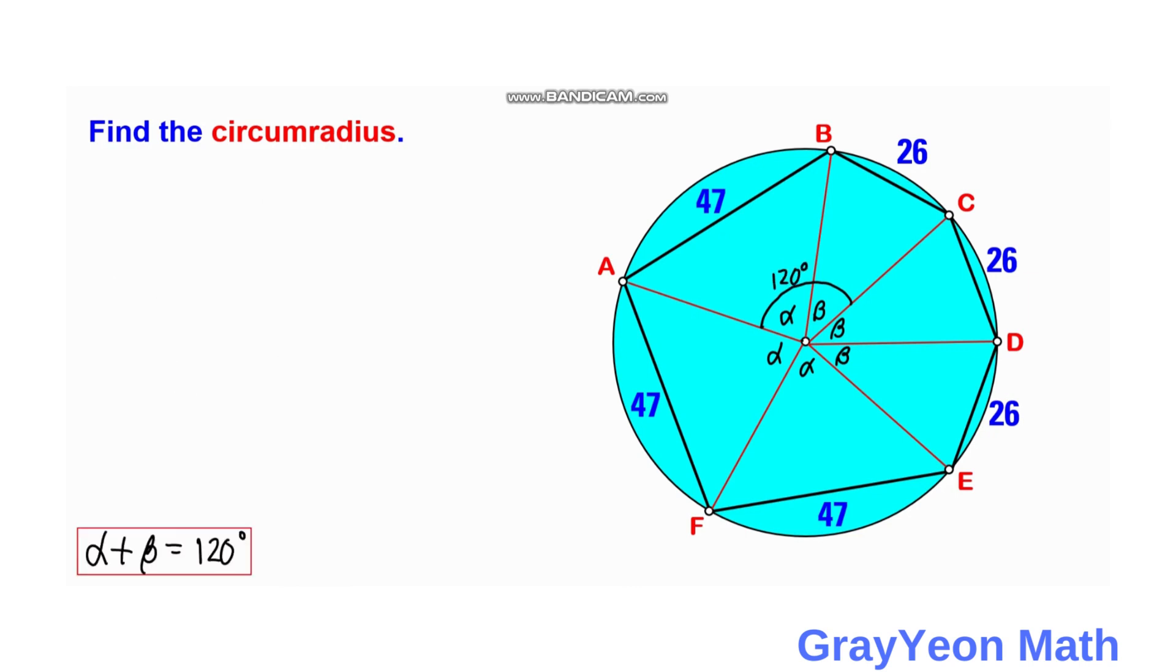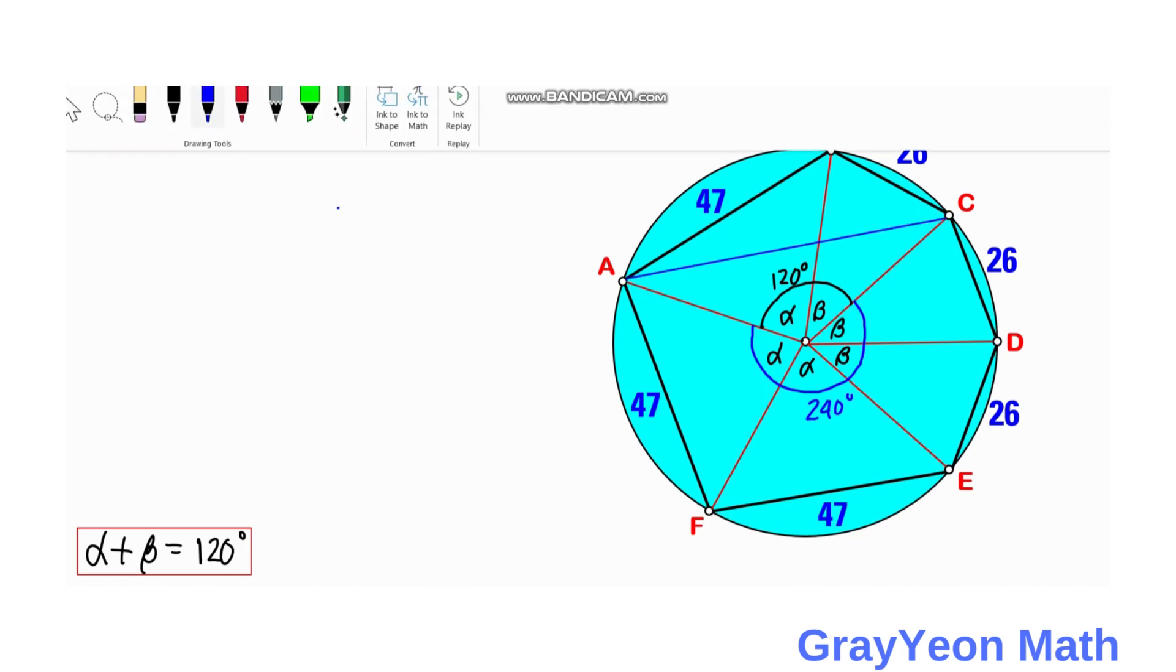So this angle is 120 degrees, which means this central angle should be 240 degrees to complete a whole rotation of 360 degrees. Next, we draw a line from point A to C. Notice that this central angle of 240 degrees is twice this angle at B. So if that is twice, then this angle at B should be 120 degrees.